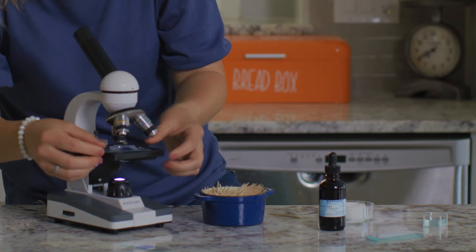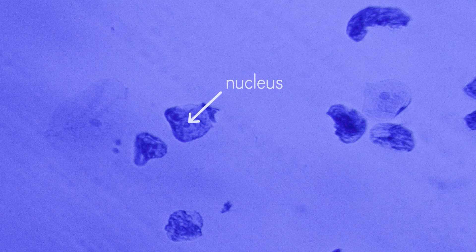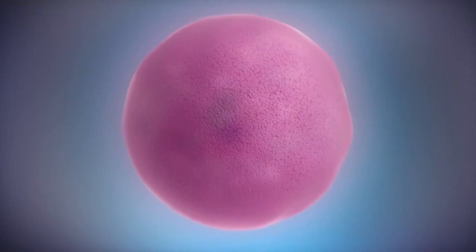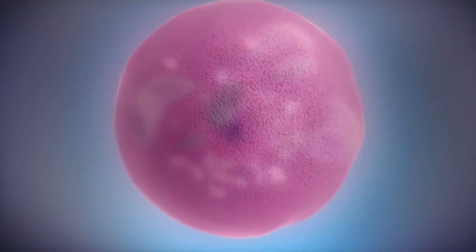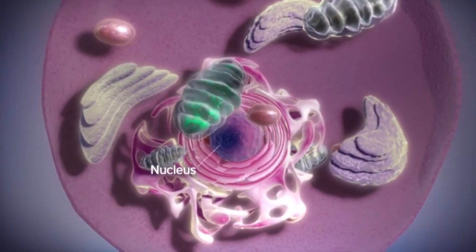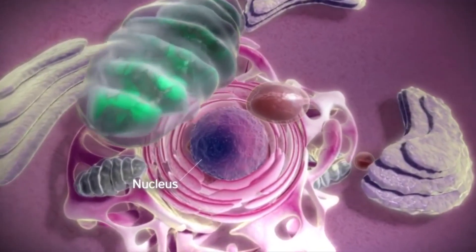Let's find out! What do you see on this slide? Can you see the dark blue nuclei in this sample, just like the last one? And here is the outer circle that makes up the cell membrane. All skin cells, no matter what part of the body they come from, have a nucleus, cytoplasm, and a cell membrane.